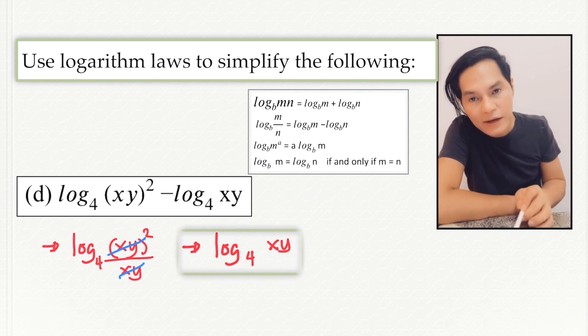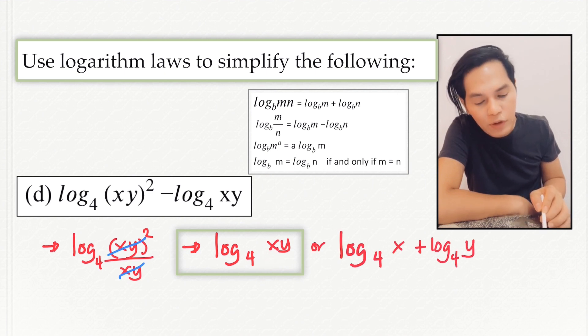Actually, we can have this one as our final answer. Though you can also have it in addition of this logarithm. The log of x to the base 4 and the log of y to the base 4. Both are correct. This can be our final answer. Why? Because they don't have an expression anymore that can be simplified.